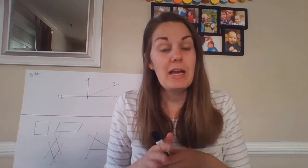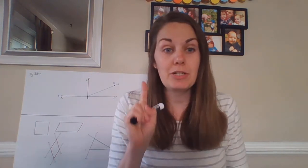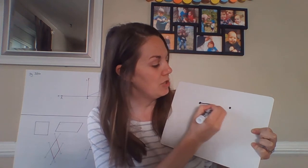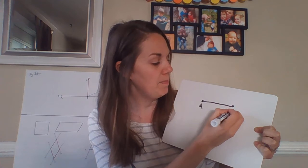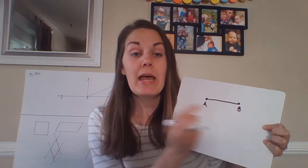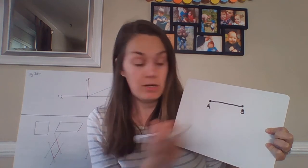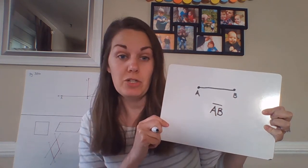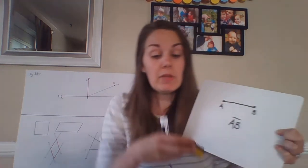Math is just a way for us to make sense of the world around us. A line segment is part of a line that runs between two points. If I had point A and point B, I would have a line segment from A to B, and in math notation I would write that as AB with a line over it to show it's line segment AB.